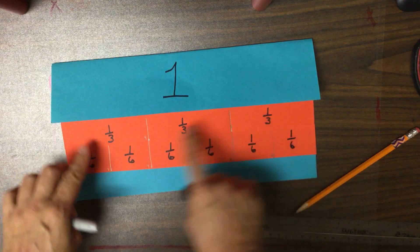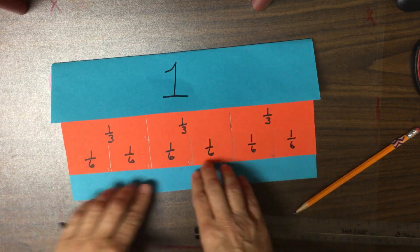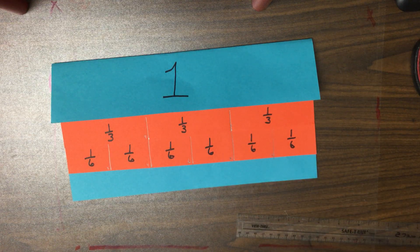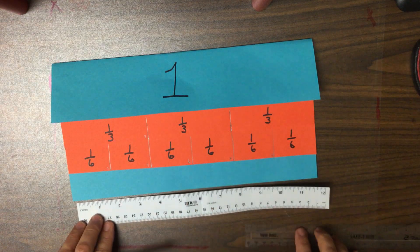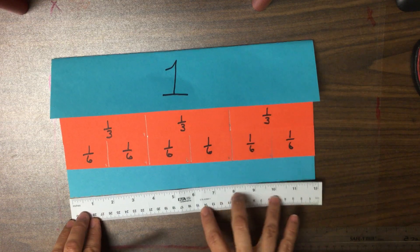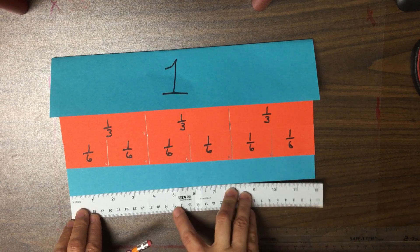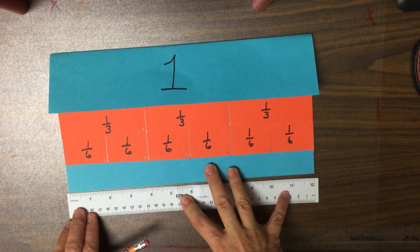All right. So, we went from three pieces to six pieces. So, what do you think we're going to do on this last one? If you've been paying attention, you probably figured out that we're going to divide these 12 inches into 12 pieces. So, each piece will be, that's right, one inch long.